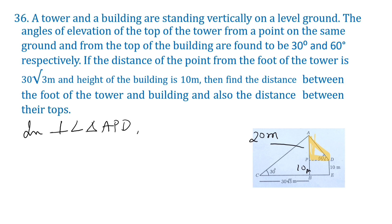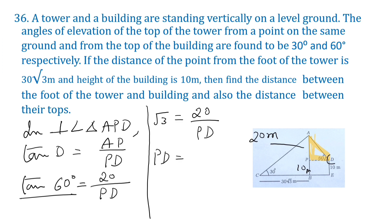In triangle APD, tan D is equal to AP by PD. Tan D means tan 60. AP is 20, PD we have to find out. Tan 60 is root 3, equals 20 by PD. So PD is equal to 20 by root 3.